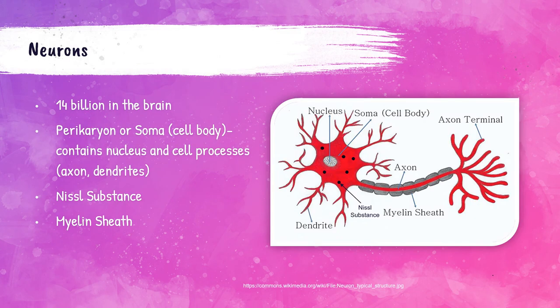The first group involves neurons — nerve cells that help send messages throughout the body. There are around 14 billion neurons within the brain. The neuron contains a cell body, also called a soma or perikaryon, which contains a nucleus and can also include the axon and dendrite. Looking at a neuron diagram, we have the nucleus, the soma or cell body, dendrites, axons, and axon terminals.